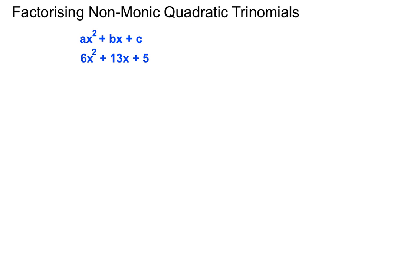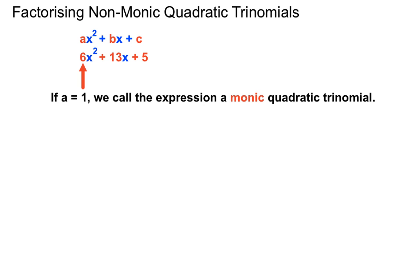We can label the numbers on this algebraic expression. That front number in front of the x squared we'll call a. The number in front of the x is we call b, in this case 13. And the number on its own at the end we call c, just for referencing this expression. Now if that front number is a 1, which we saw in the previous video, we call it a monic quadratic trinomial. But this number isn't a 1, it's a 6. So when it's not a 1, we call the expression a non-monic quadratic trinomial.